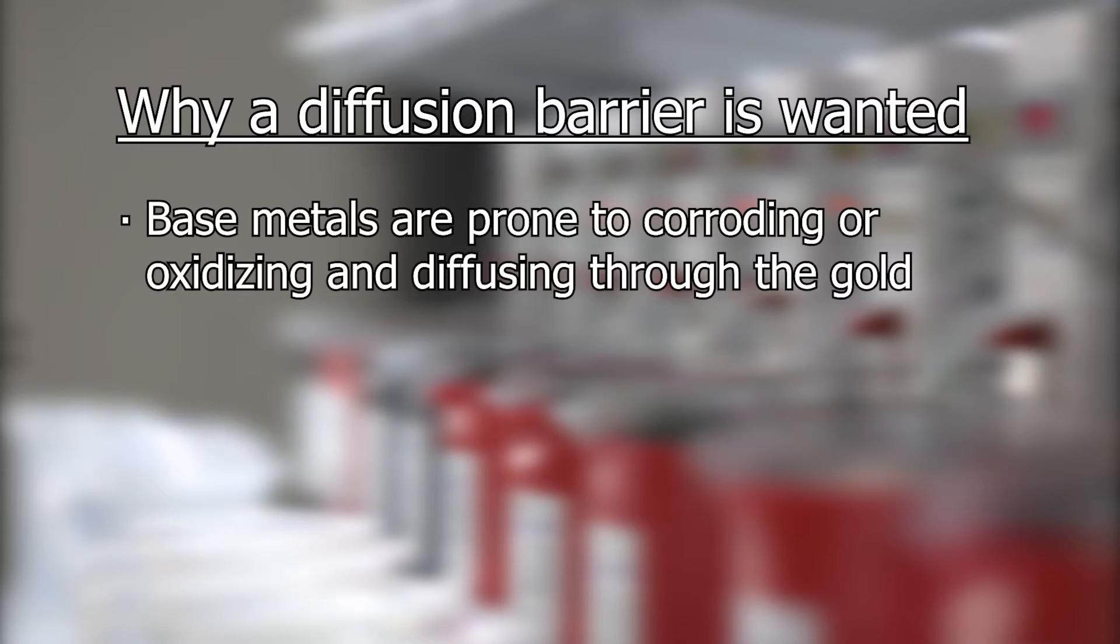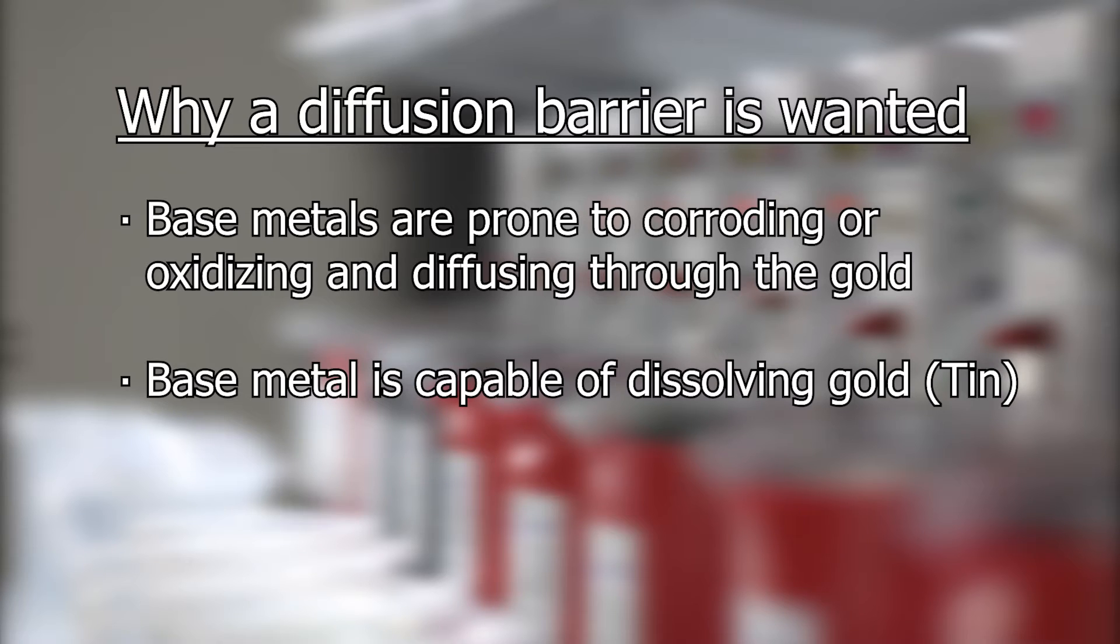To review, some of the reasons why you may want to add a diffusion barrier to your plating process is if the base metals are prone to corroding or oxidizing and diffusing up through the gold, or the base metal is capable of dissolving gold. This usually occurs with tin. In this situation, a diffusion barrier is required given that plating the gold layer thick enough will not resolve the issue. There may be other reasons why you might want to use a diffusion barrier, but these are the most common ones we see with our customers.